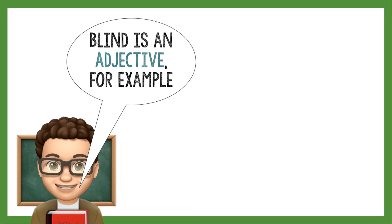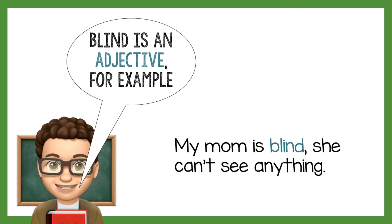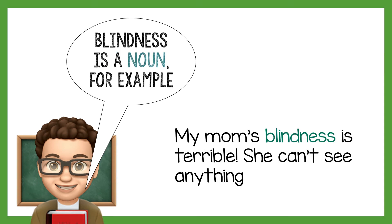Blind is an adjective. For example: 'My mom is blind. She can't see anything.' So the word 'blind' is giving characteristics to whom? To my mom — I'm saying that my mom is blind. Blindness is a noun. For example: 'My mom's blindness is terrible. She can't see anything.' So I'm talking about my mom's blindness — that is a terrible thing because she cannot see anything.